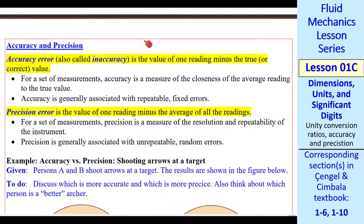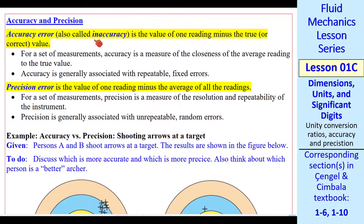Let's talk a little bit about accuracy and precision. Accuracy error, also called inaccuracy, is the value of one reading minus the true or correct value, assuming we know the correct value, which is not always the case. For a set of measurements, accuracy is a measure of how close the average reading is to the true value. Accuracy is generally associated with repeatable, fixed errors, also called systematic errors.